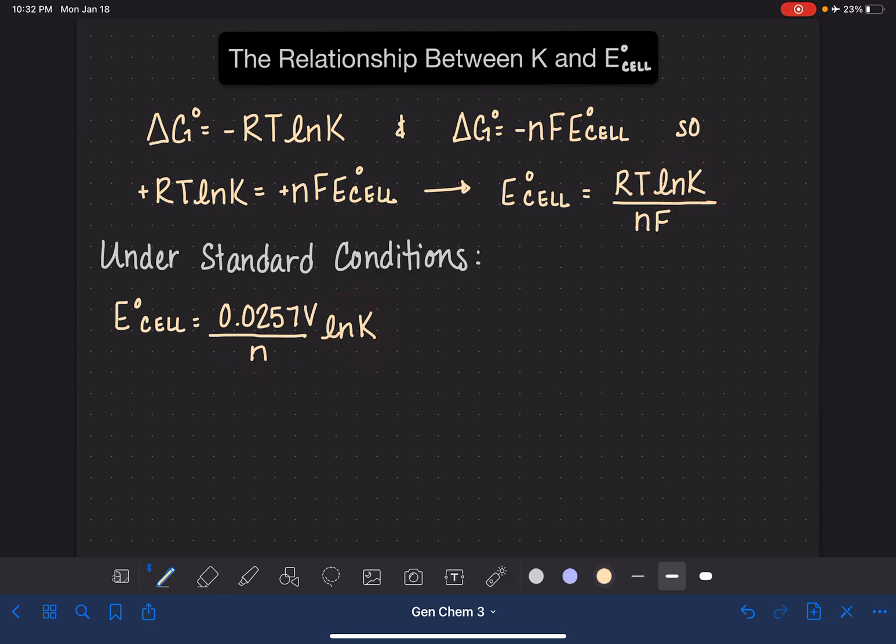Not everybody likes to use the natural log, so math gives us the ability to rearrange this equation to convert from natural log to log base 10, and this would be the form of the equation that you would use if that was your preference, 0.0592 volts over N times log base 10 of K. You can use either one of these equations, whichever one you would prefer.